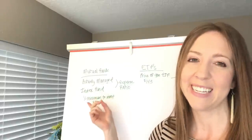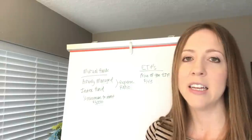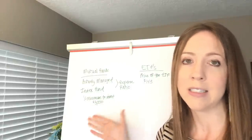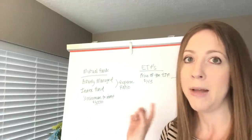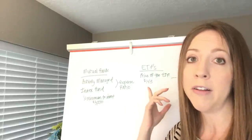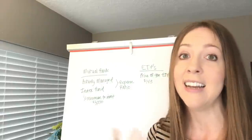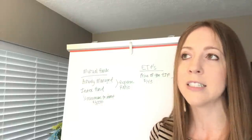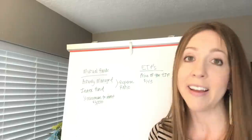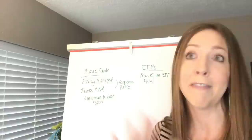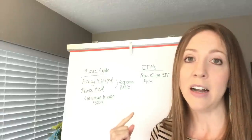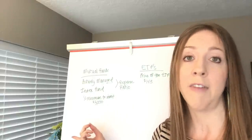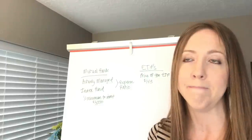Don't get too hung up on waiting until you have $3,000 for an index fund. Get your money invested as soon as possible. If you only have a few hundred dollars, start with an ETF — get it working for you sooner rather than later, because the earlier you start investing, the more money you can make over the long term. Start with the ETF and pay that commission fee of around $5 to $10.